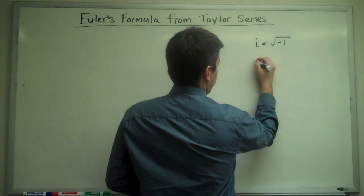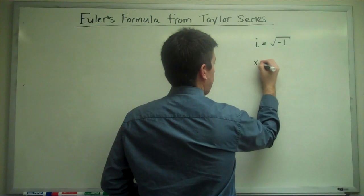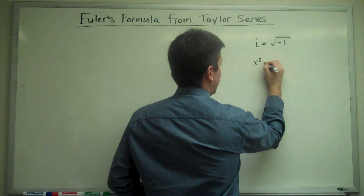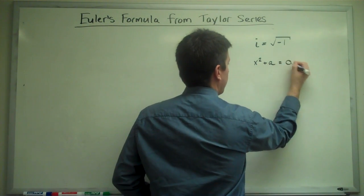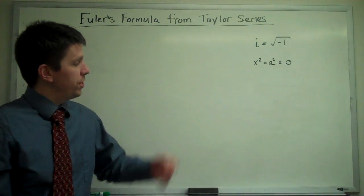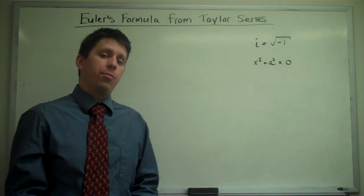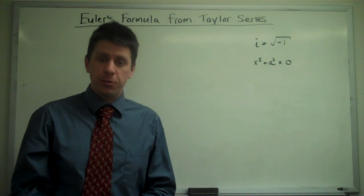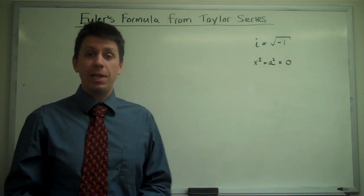For instance, if we have the equation x squared plus a squared equals zero, with only real numbers we could not solve this equation for x. It would have no real answer.